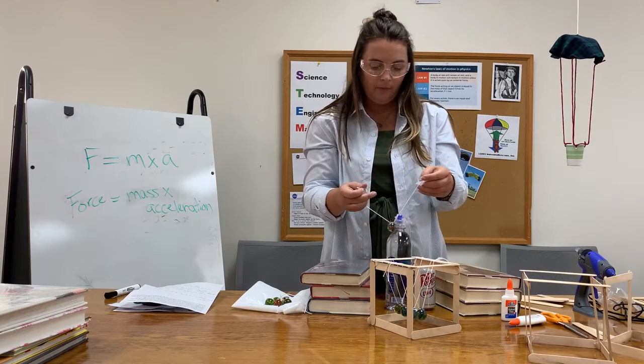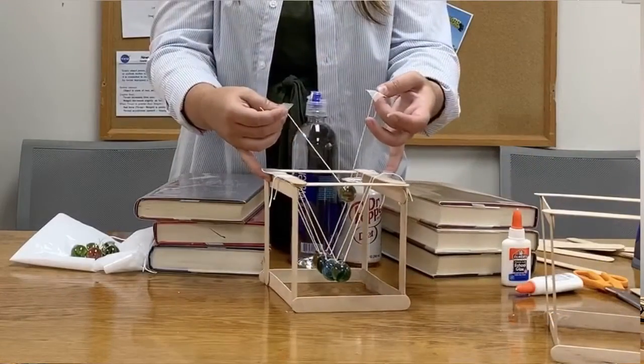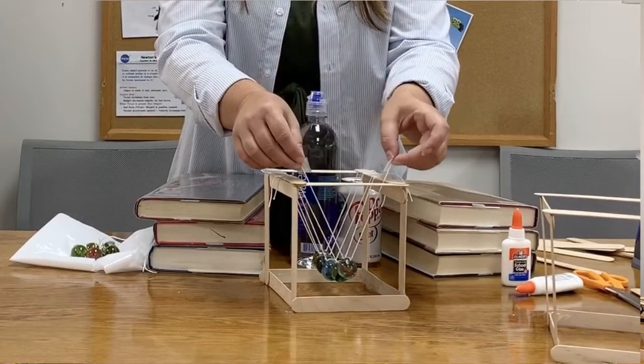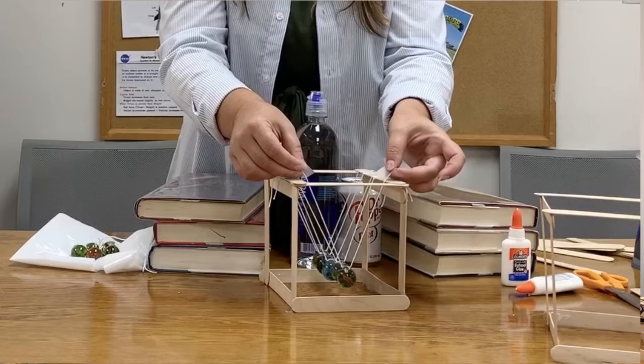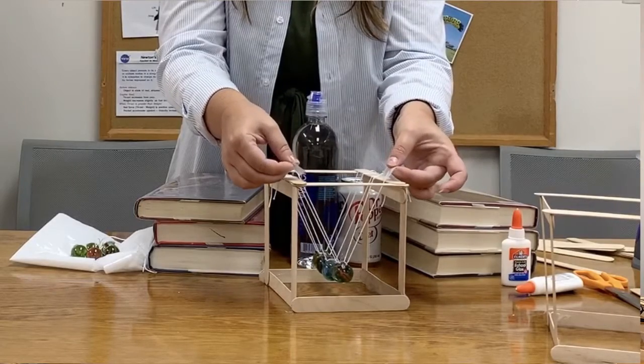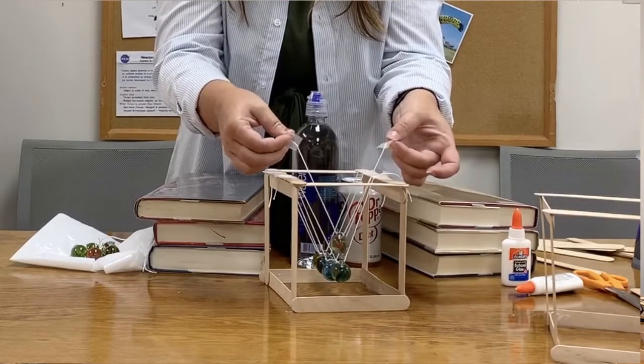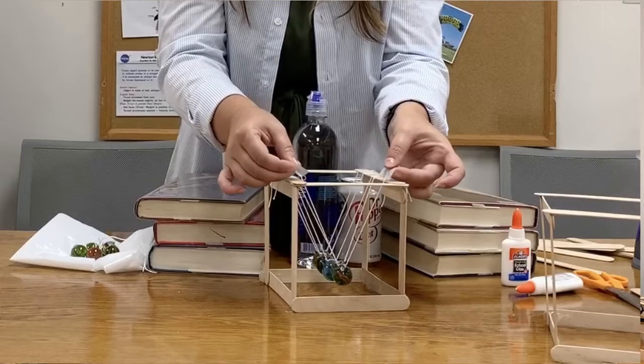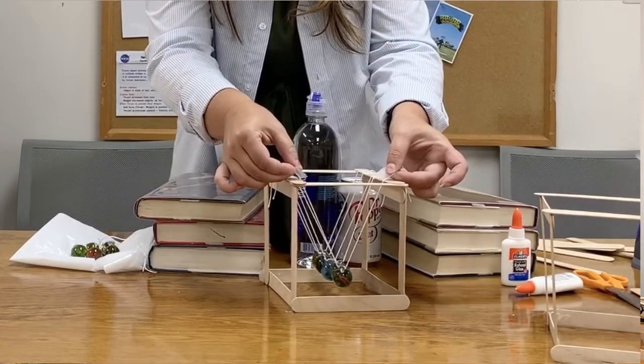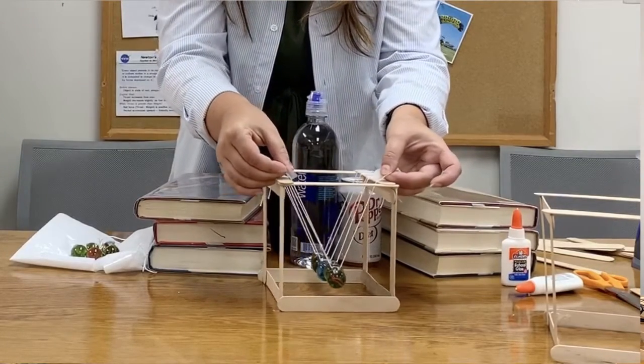So start in the middle. And I'll show you with the first one here. You start in the middle and I find it easy to just hold both sides of the string with tape on to make sure it's level. So it's straight on.